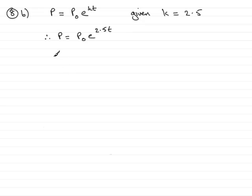Now we've got to work out the time taken when the population, the initial population, doubles. In other words, when p equals 2p₀.